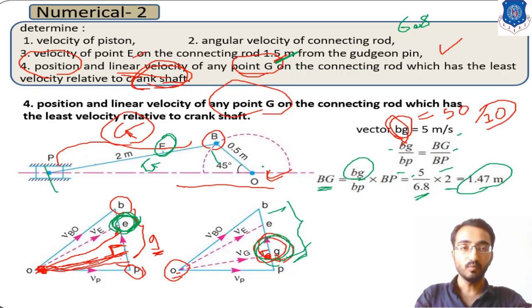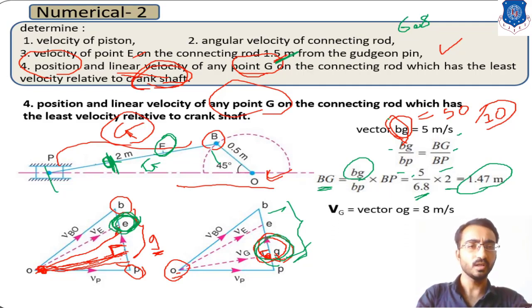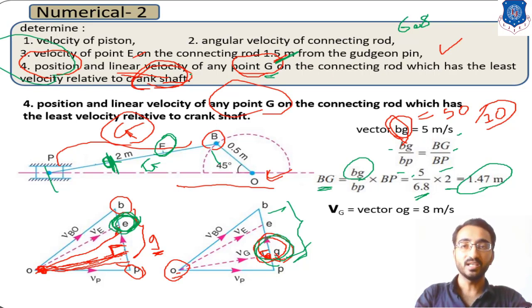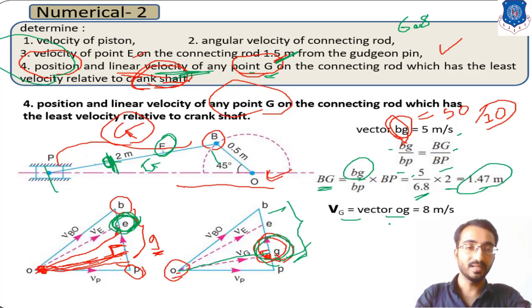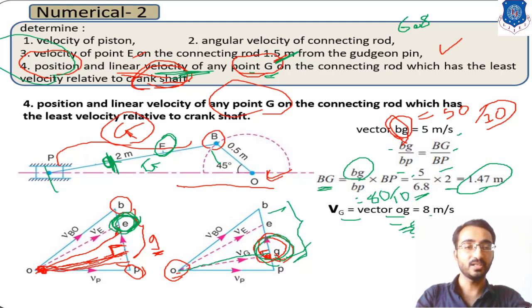So from point B, point G lies at a distance of 1.47 meter along the connecting rod. That is the position of point G which has the minimum velocity. The linear velocity of G is obtained from vector OG — the line joining O to G on the velocity diagram. This length measures 80 mm, and dividing by the scale of 10 mm gives 8 meter per second.